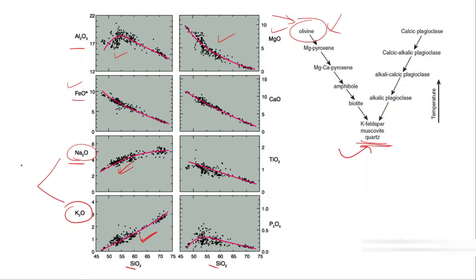Why do you see this increasing trend? If you remember, both are important constituents of alkali feldspar. If you look at Bowen's reaction series, alkali feldspars crystallize later in the magma series.